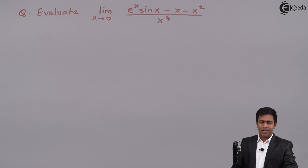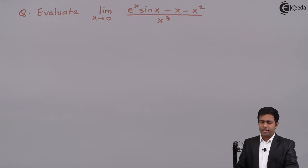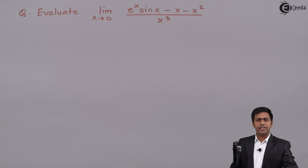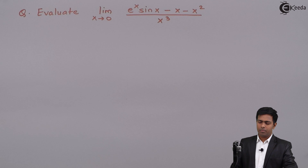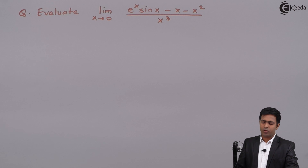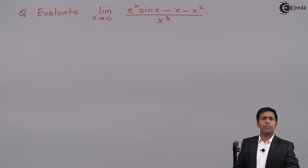Hello everyone. Here we have to evaluate the limit as x tends to 0 of (e raised to x · sin x minus x minus x squared) upon x cubed.